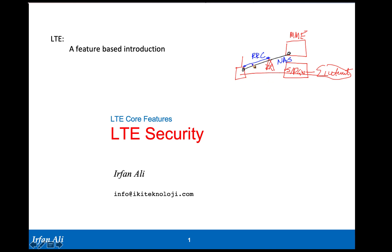In this lecture we will cover how these signaling connections are secured, and also how the data plane connection is secured between the UE and the network. Security here covers two main aspects: confidentiality — or encryption — and integrity protection. We will provide an overview of what each involves.